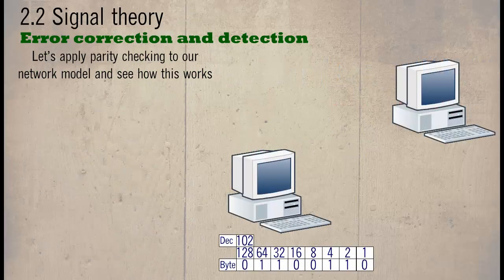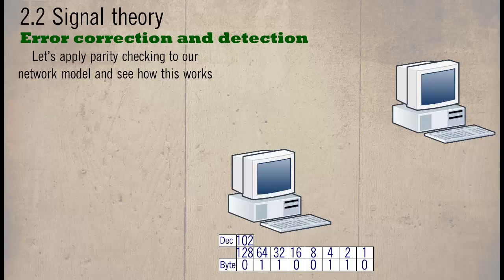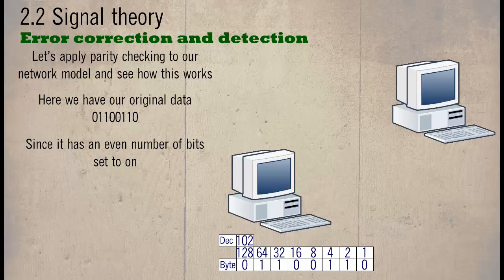Let's apply parity checking to our network model and see how this works. Here we have our original data 01100110. Since it has an even number of bits set to on, then the checksum would be 1.